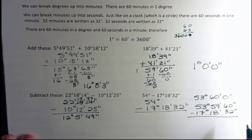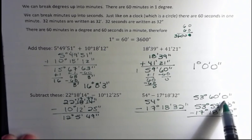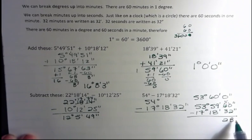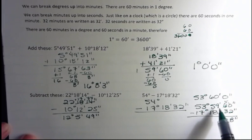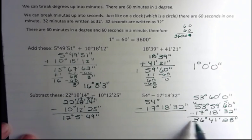So 60 minus 32 is 28. And then I'm going to subtract 59 minus 18 is 41, and then 53 minus 17 is 36. So 36 degrees, 41 minutes and 28 seconds.